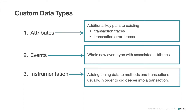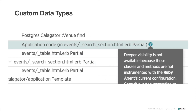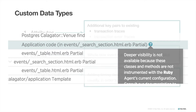And finally, I can add custom instrumentation. For example, I can add timing data to methods and transactions. Usually, I would do this when I need to dig deeper into a transaction. Anytime I see the question mark icon in a transaction trace, there's likely an opportunity to add custom instrumentation for better information about what's going on inside my app's code.